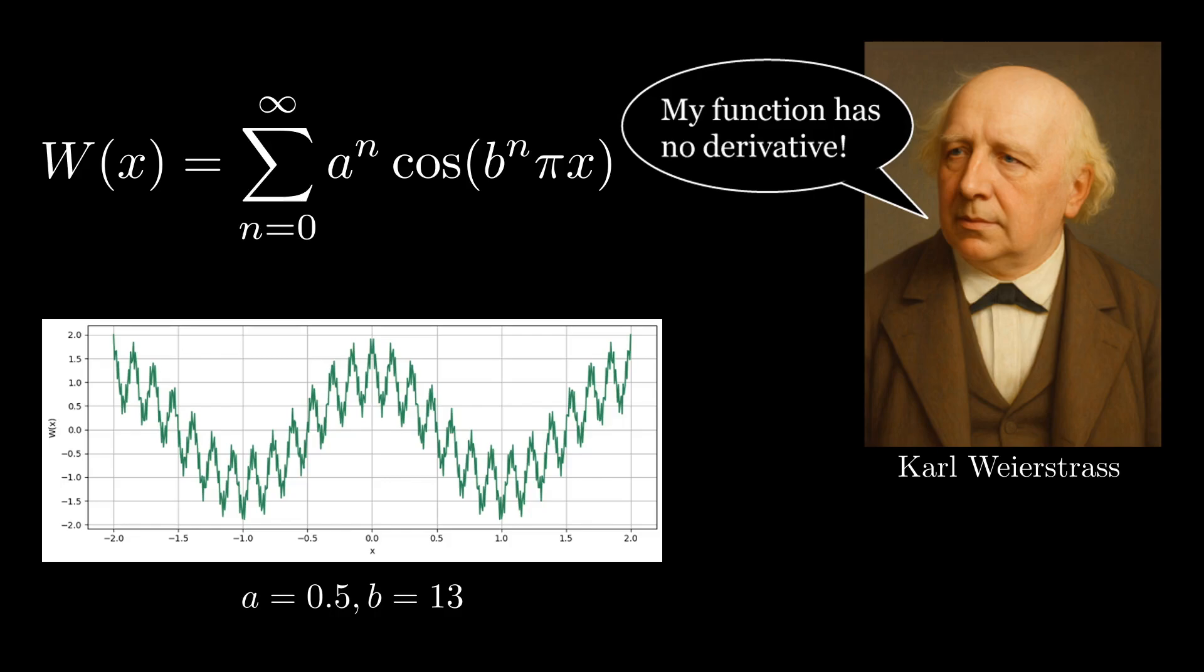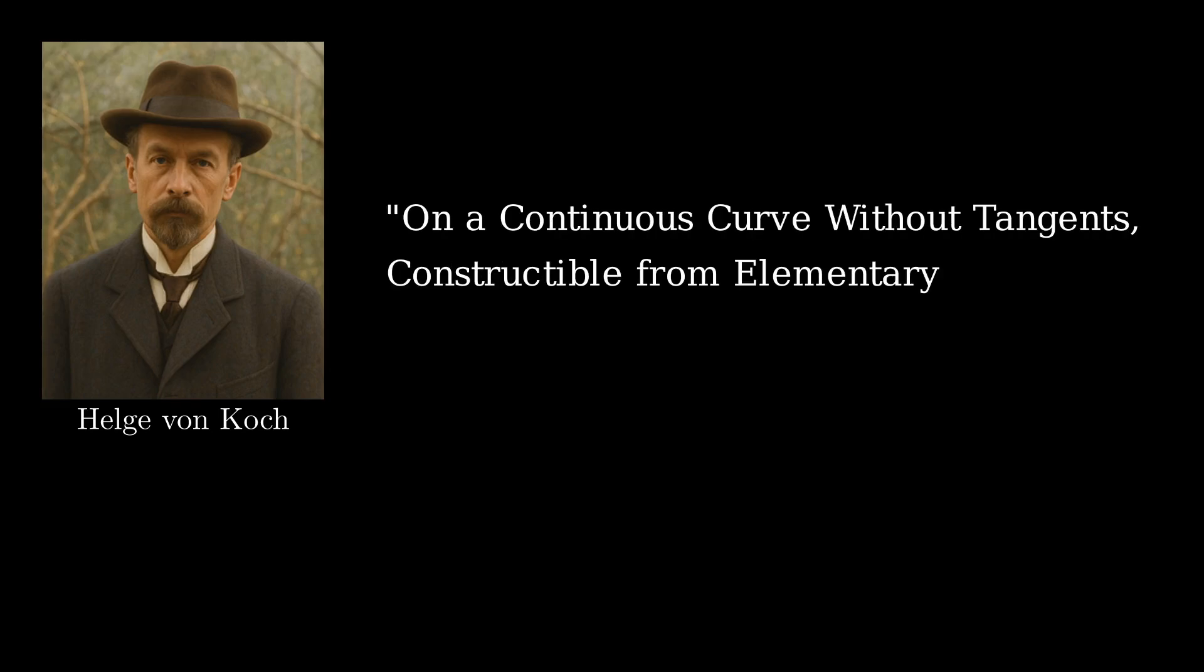Weierstrass's function, and many other such examples that came afterward, were described in terms of infinite series and formulas. But in 1904, the Swedish mathematician Helge von Koch described a continuous curve with no tangents that was constructed from elementary geometry using an infinite sequence of iterations.